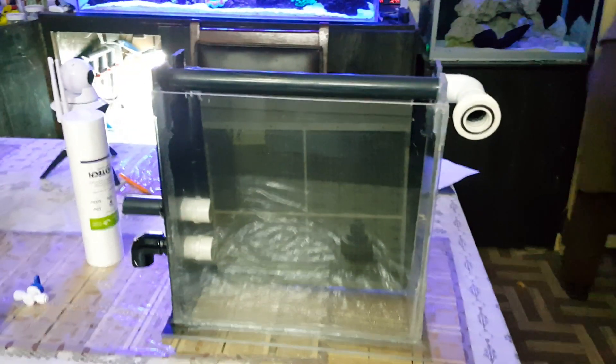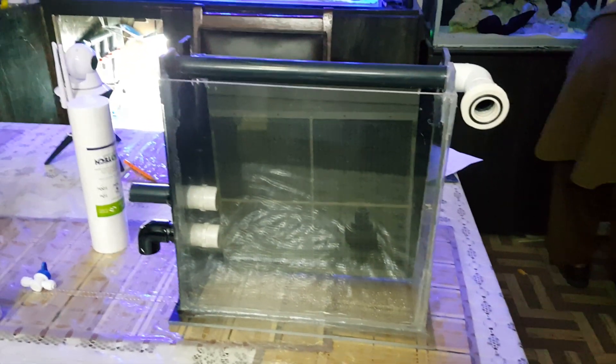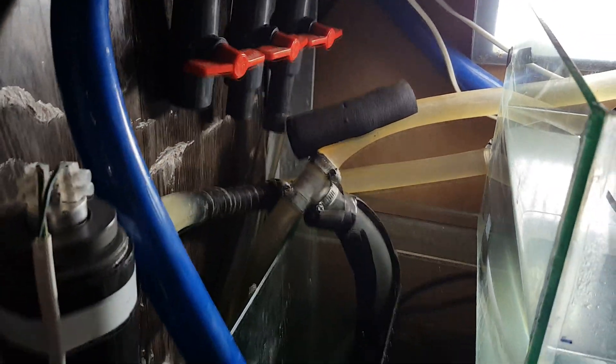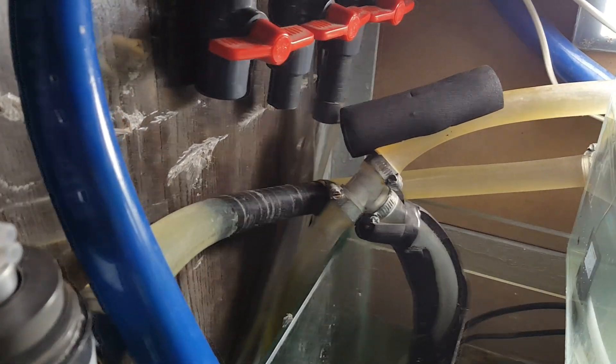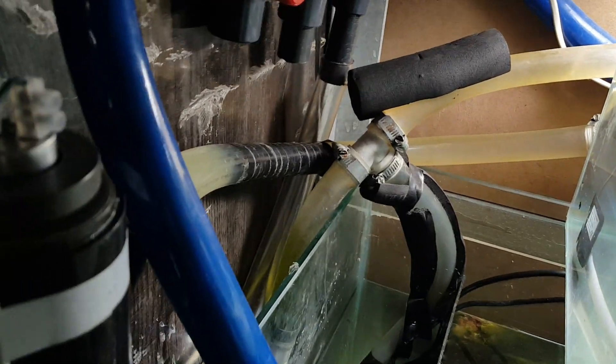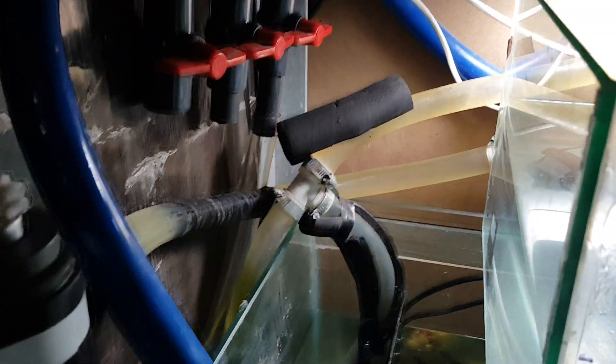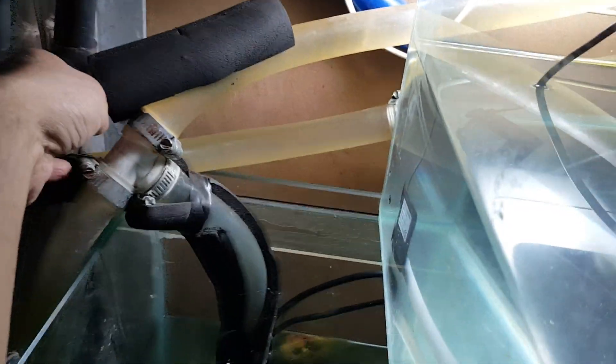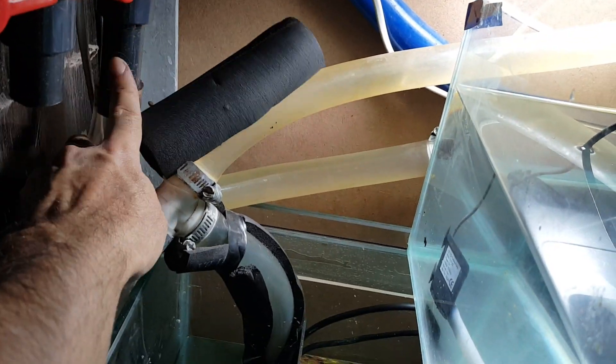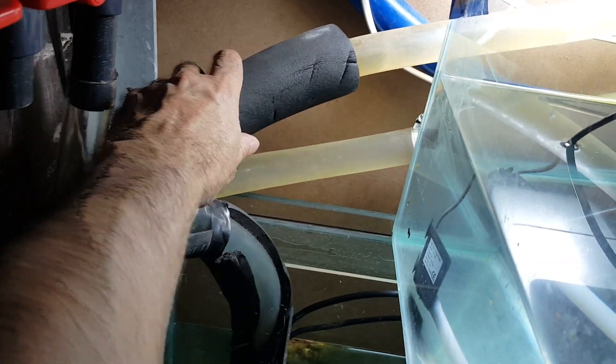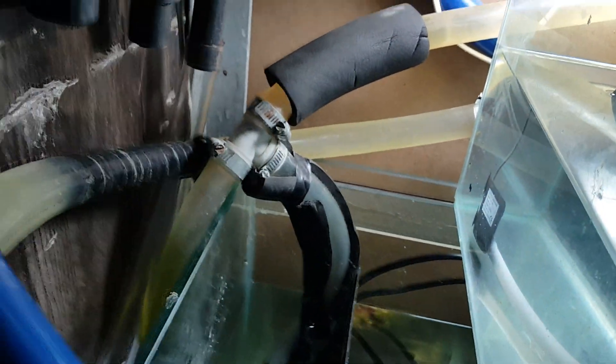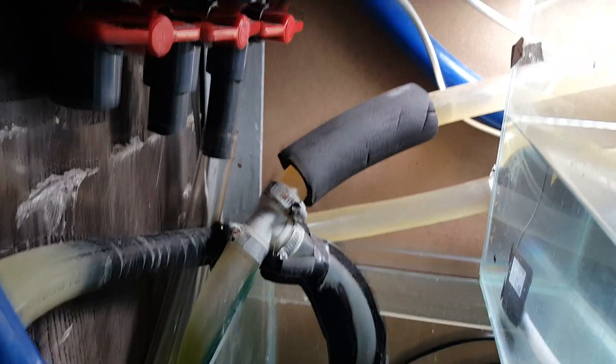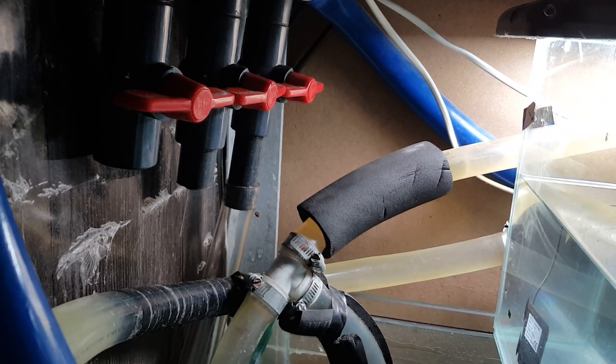So this is the place where I have designed to place this turf scrubber. And this is the manifold that I may use temporarily till the time I put on an exclusive small little pump for this scrubber, because generally I don't think it is recommended to just disturb the main return.